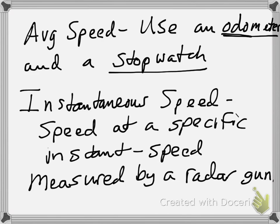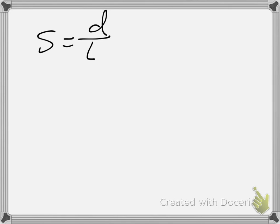In higher levels of physics we have nice formulas for instantaneous speed, but at this level, without the use of calculus, we don't have a good way to talk about it. So we will not do too much with instantaneous speed mathematically. For almost all of our purposes, when we talk about speed, we will use the average speed and the formula S equals D over T — it is simply the rate at which you're traveling.